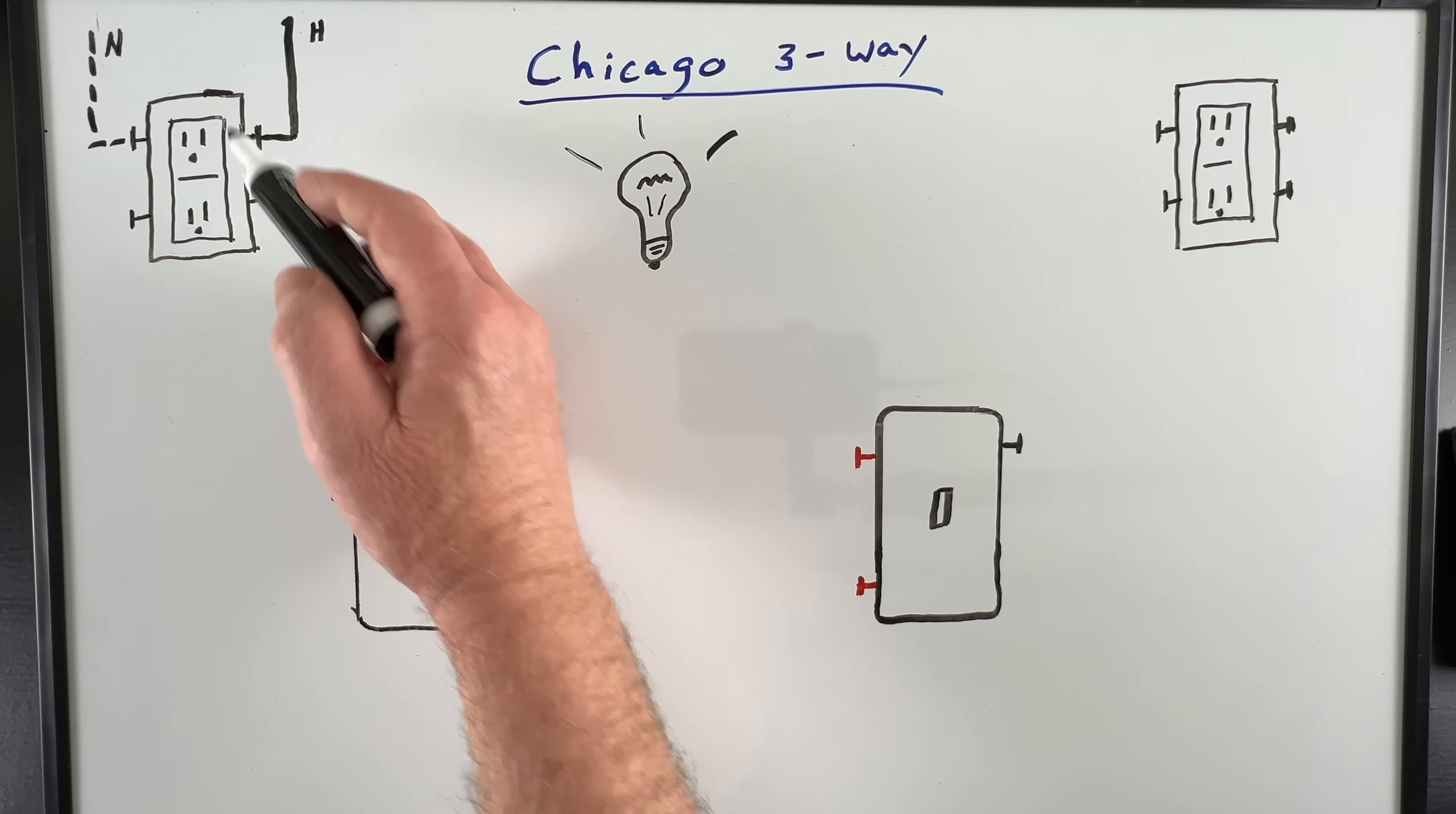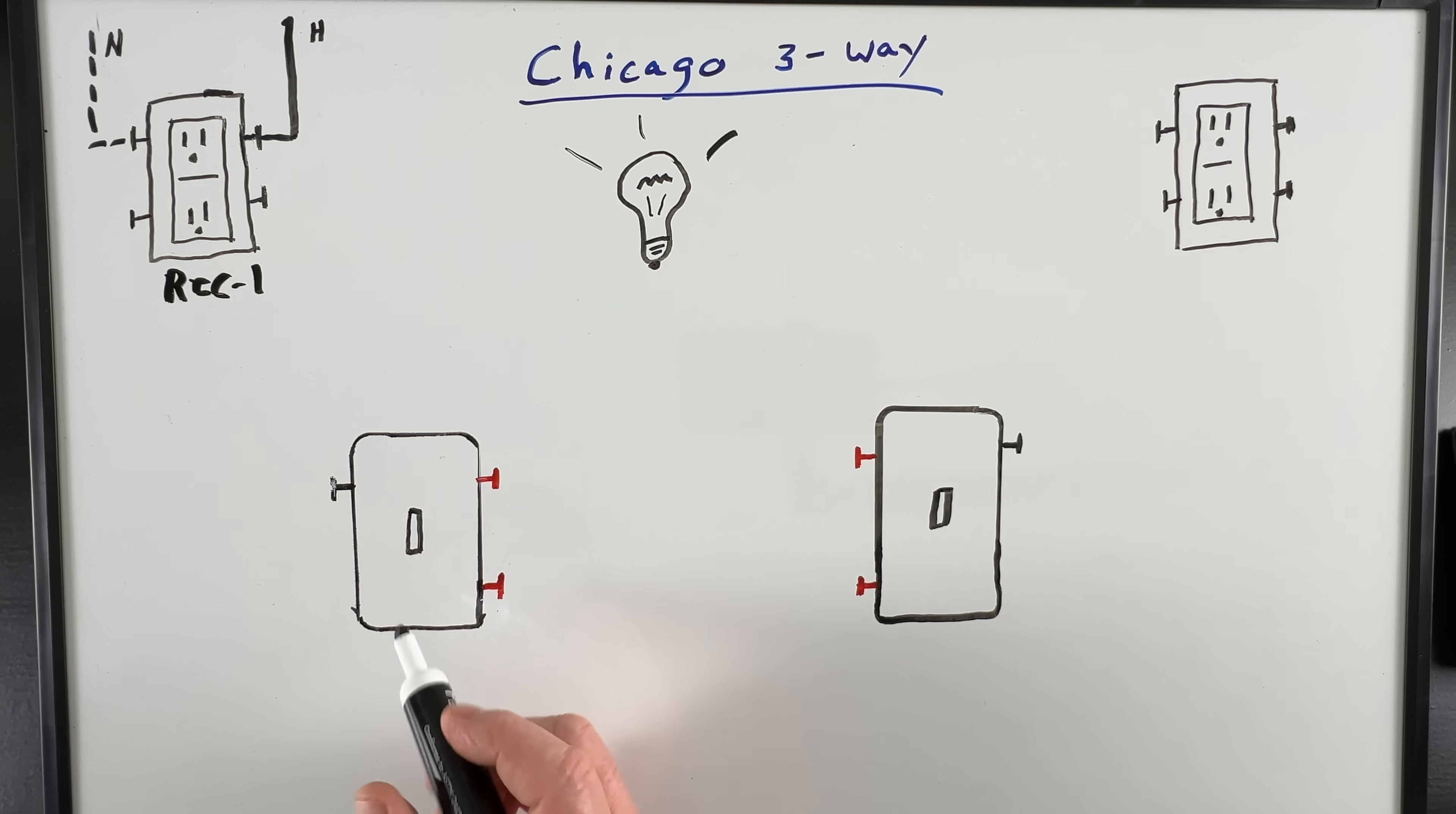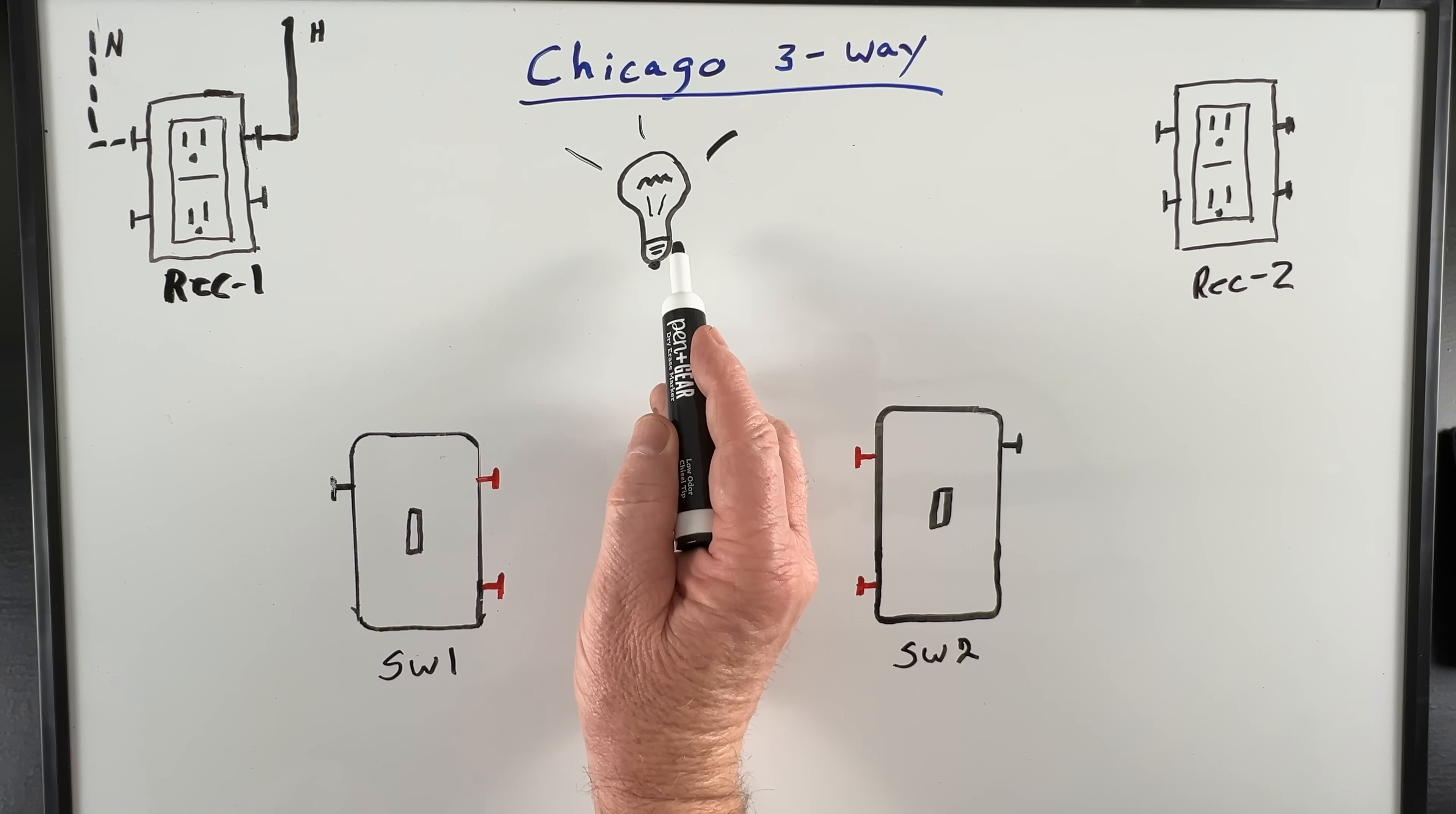Up here on the left, we have our hot and our neutral coming into our first receptacle. We'll call this receptacle one. Then we have our first three-way switch down here. We'll call switch one. Our second three-way switch, switch two. And our receptacle over here, we'll call this receptacle two. Then of course up here, we have our light.